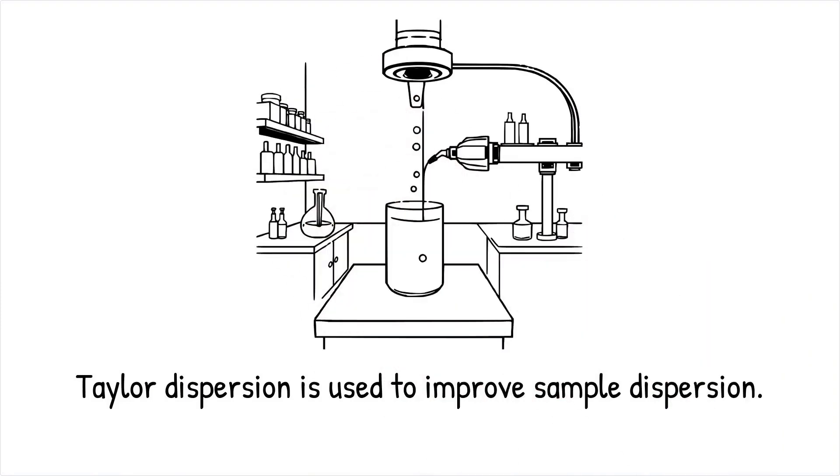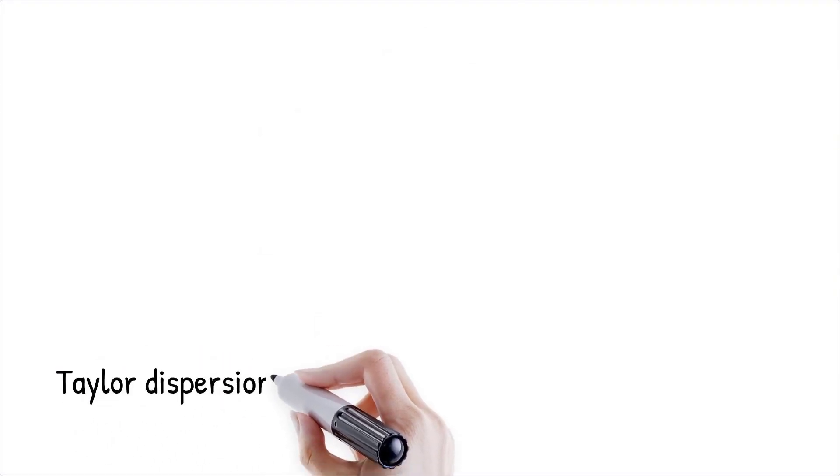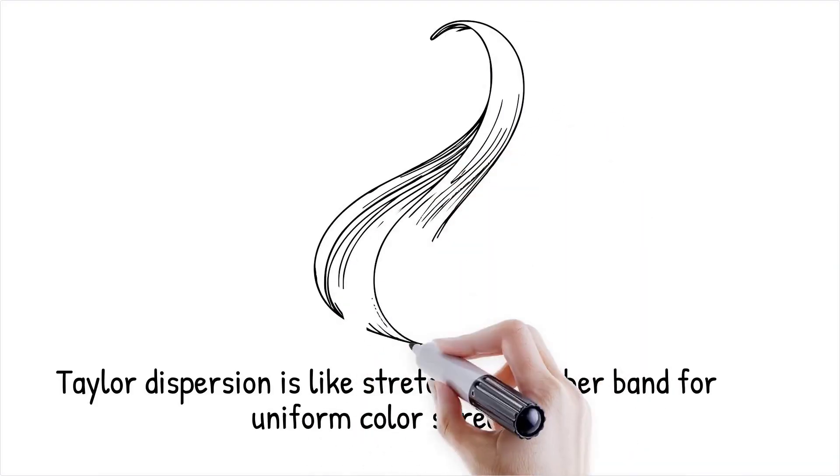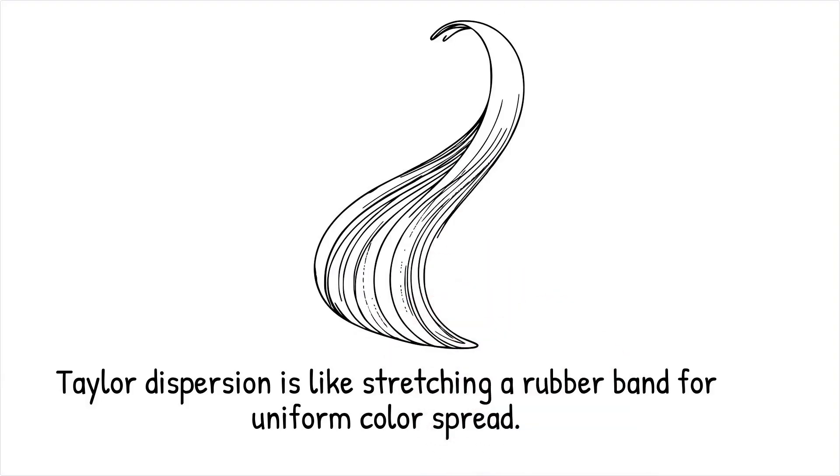Taylor dispersion enhances sample mixing in microfluidic drug screening platforms, ensuring consistent exposure across reaction zones. This effect is like stretching a rubber band - the more it elongates, the faster its color spreads uniformly.